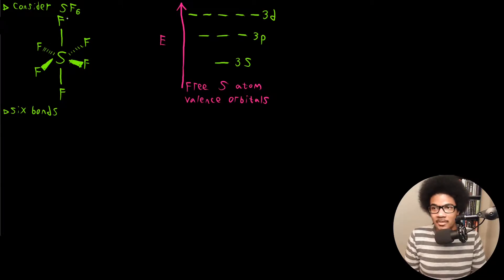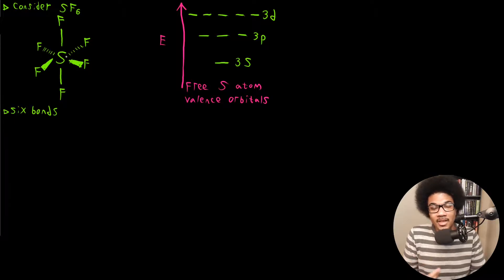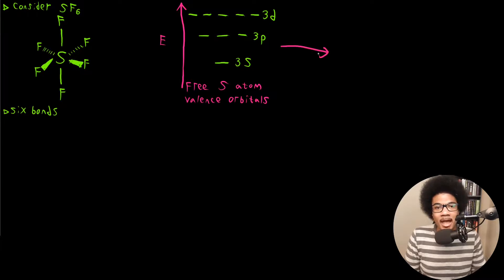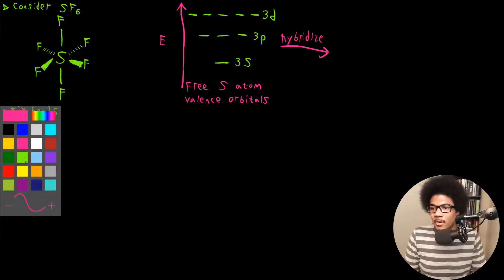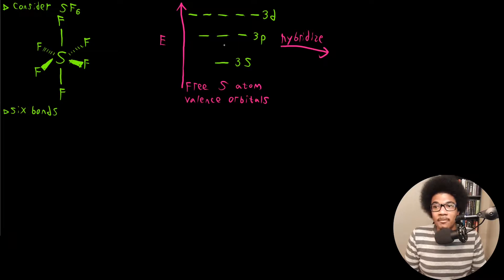So SF6 has an octahedral geometry, six bonds that adopt an octahedral geometry. And if we're following this same pattern here, we're going to have some hybridization occur. But if in this case we need six bonds, DSP3 is not going to cut it.